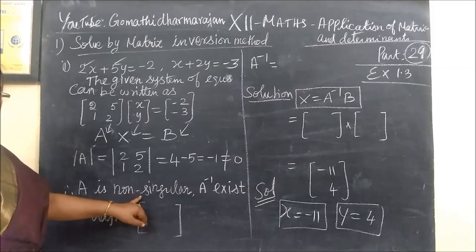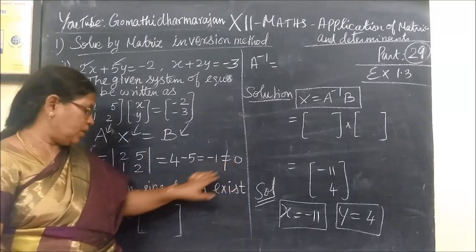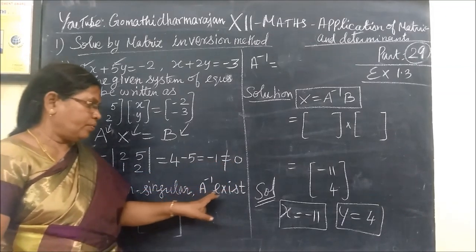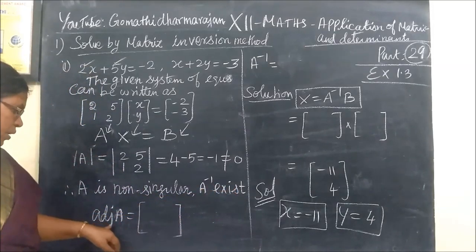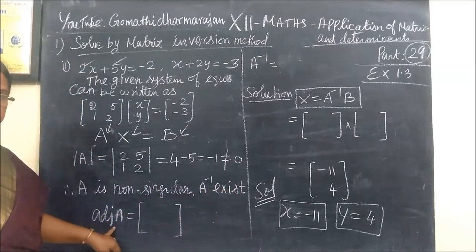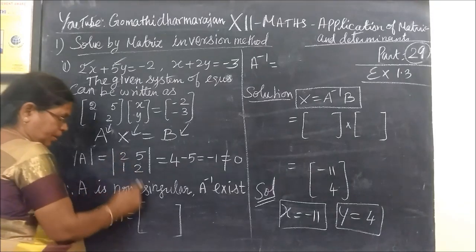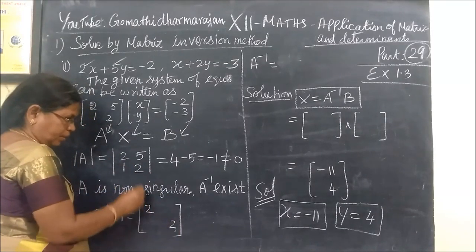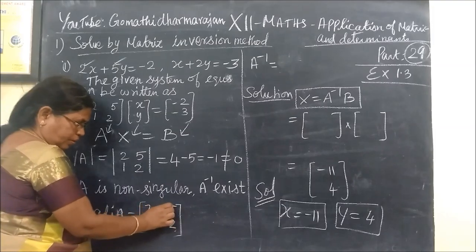The first method is to find the determinant. If the determinant is not equal to 0, then A inverse exists and A is non-singular. If it equals 0, it becomes singular; otherwise it is non-singular.